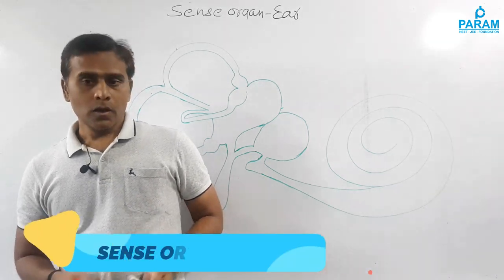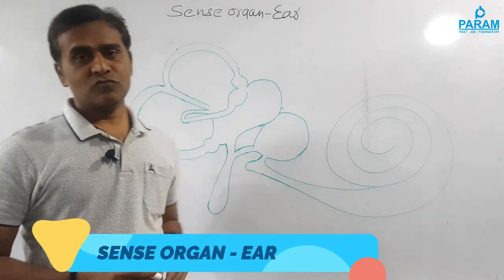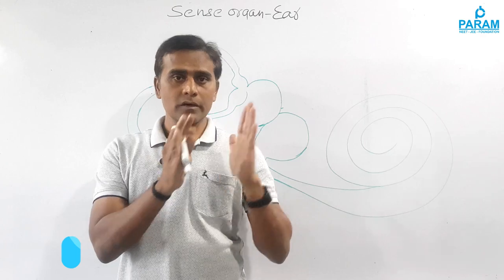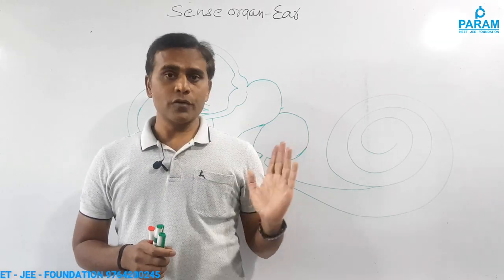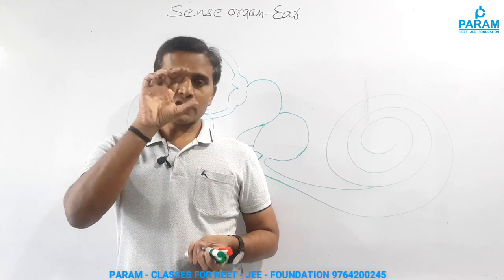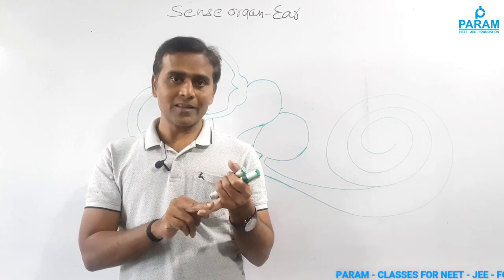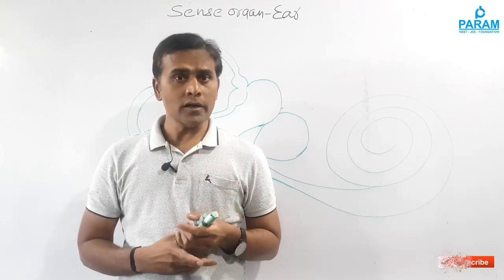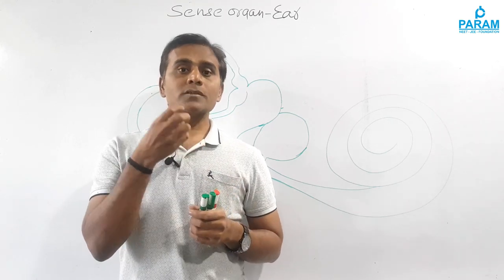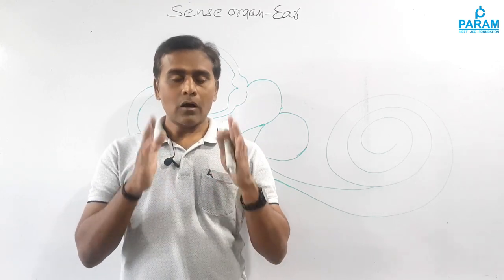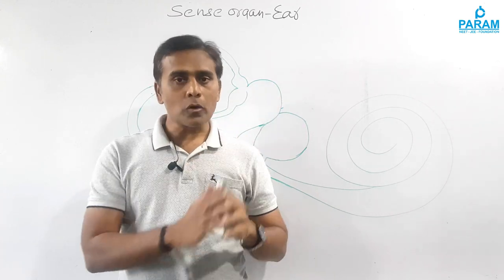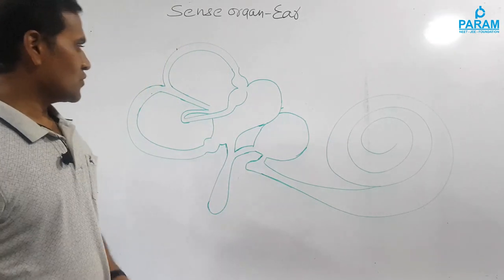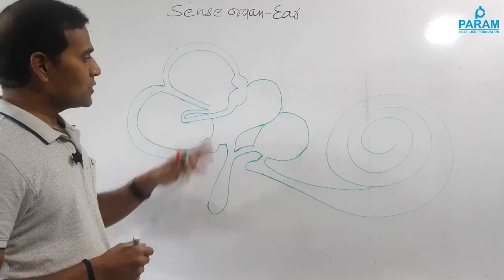In this video we are going to talk about the remaining part of the ear. In the last video we covered the detailed structure of the external ear, middle ear, and internal ear. Right now we are going to talk about the structure of the vestibule. As mentioned earlier, in the vestibule there is a presence of utricle, saccule, and cochlea, along with sensory spots — the macula and cristae.